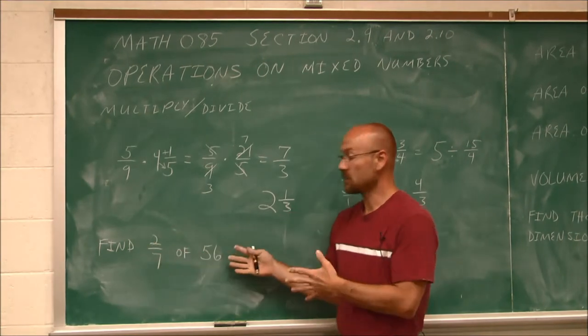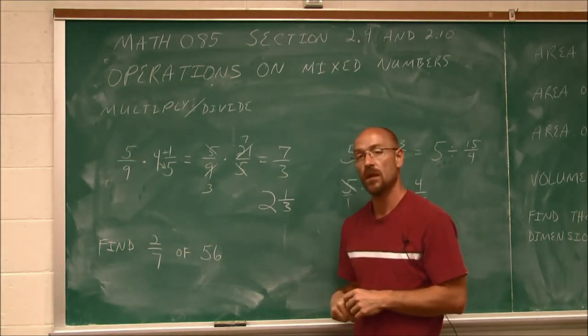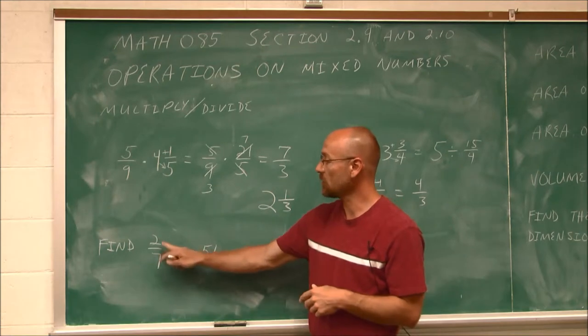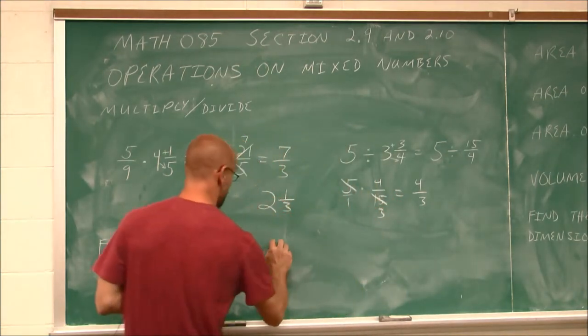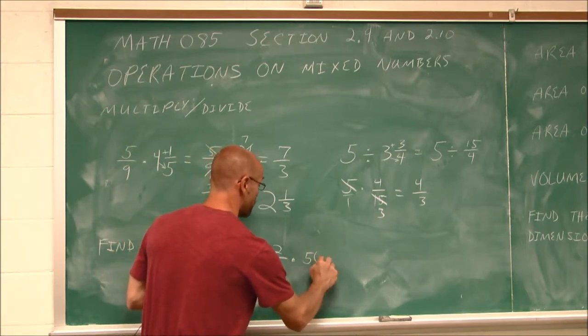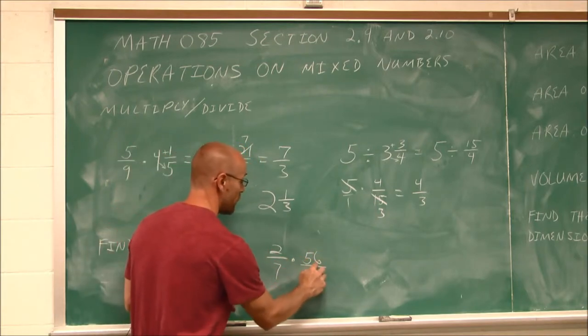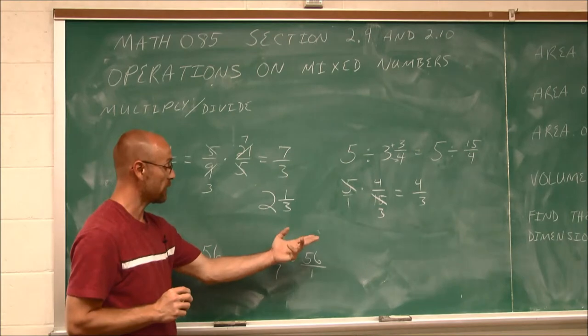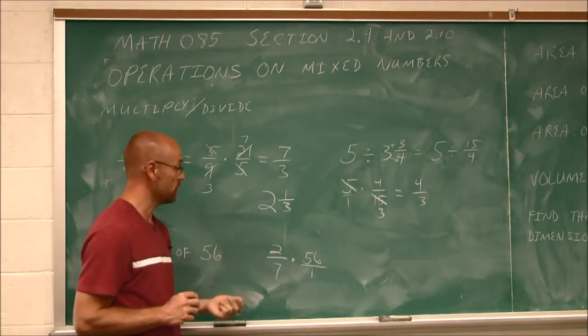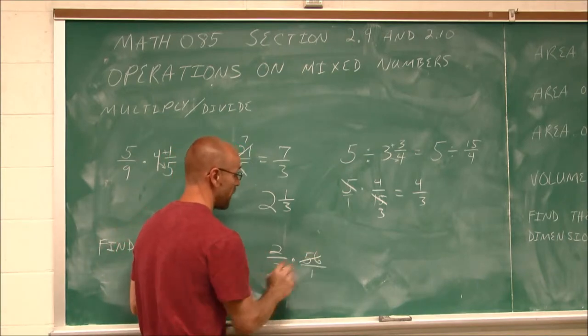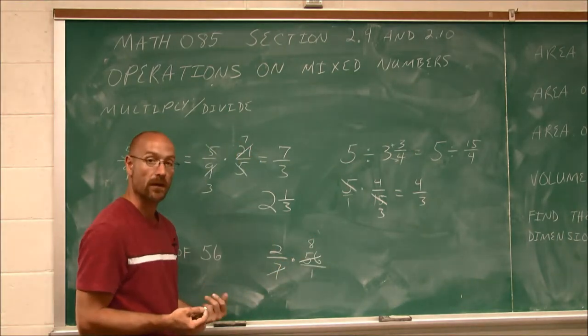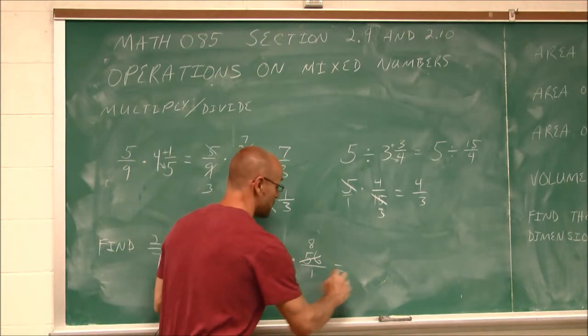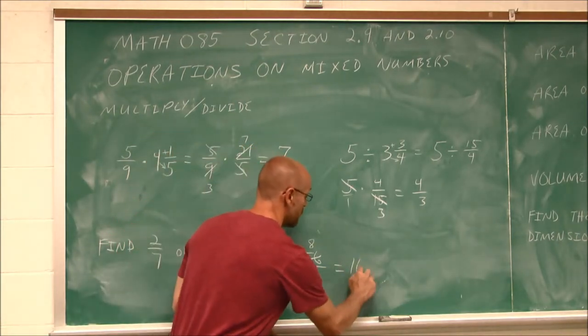What if we're asked something like this? It says, find 2/7 of 56. Well, we have to remember our terminology. Of tells us to multiply. So I'm going to multiply 2/7 times 56. Once again, we can think of this whole number as being a fraction if we write it over 1. And now I could multiply across the top, multiply across the bottom, and then reduce. But I see that 7 does divide 56 eight times. They have that common factor of 7. And now my denominators are 1. 1 times 1 is just 1. Anything over 1 is itself. 2 times 8 is 16.